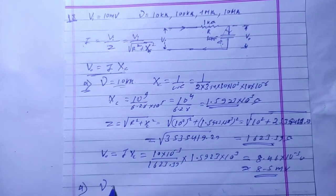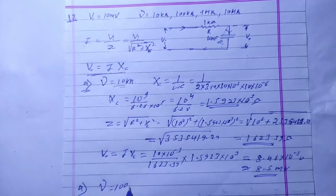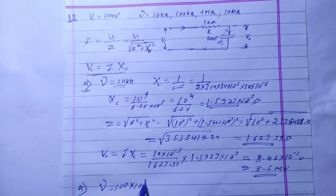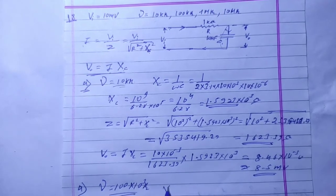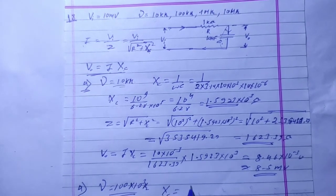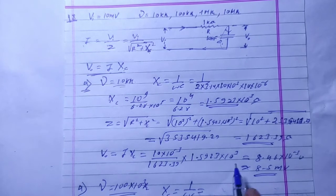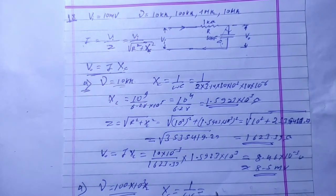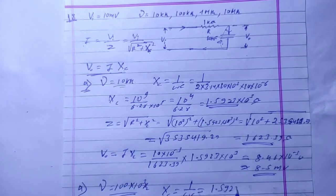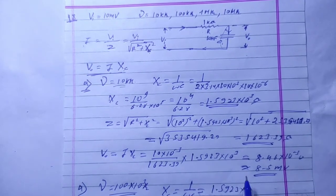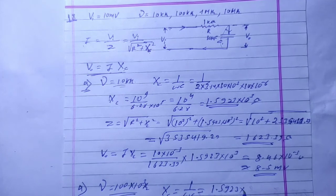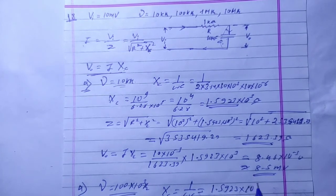For the second frequency, 100 kHz (10 to the power 5 Hz), we calculate XC using 1 upon omega C. The same formula gives XC equal to 1.5923 into 10 to the power 2 ohms.